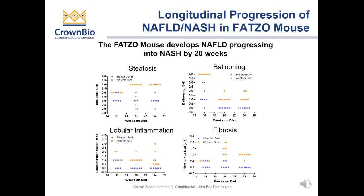This slide here represents the longitudinal progression of NAFLD NASH in the FATSO mouse on a Western diet. The Western diet animals are represented by the orange dots and the standard diet animals are represented by blue.